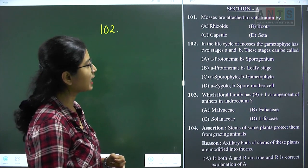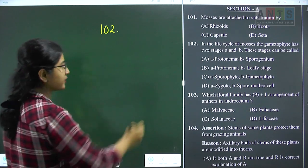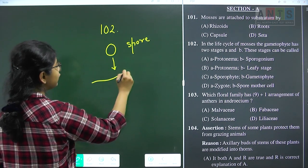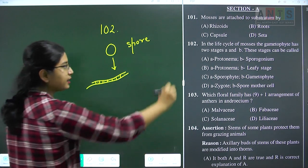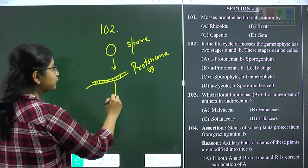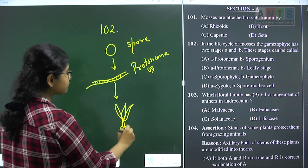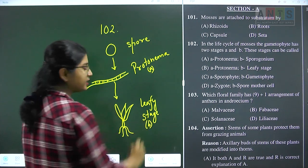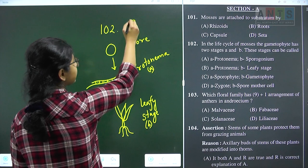Question 102: in the life cycle of mosses, the gametophyte has two stages A and B. The gametophyte stage in mosses begins with the haploid spore. Upon germination, this spore forms stem-like and root-like structures — this is stage A, the protonema stage. The second stage is the adult leafy stage, which is stage B. So question 102 answer is option B.